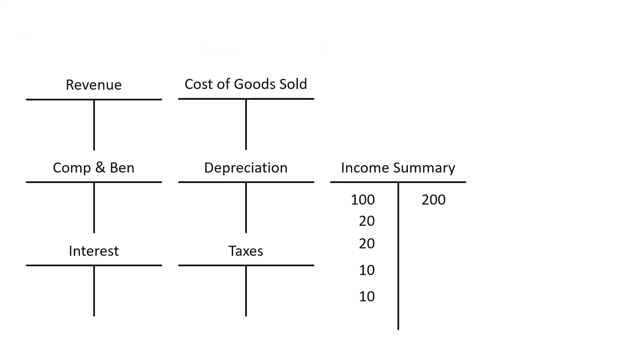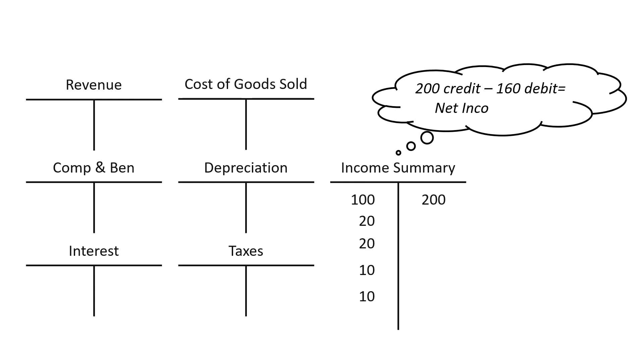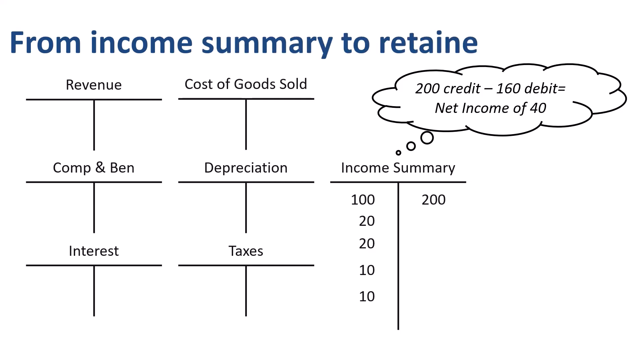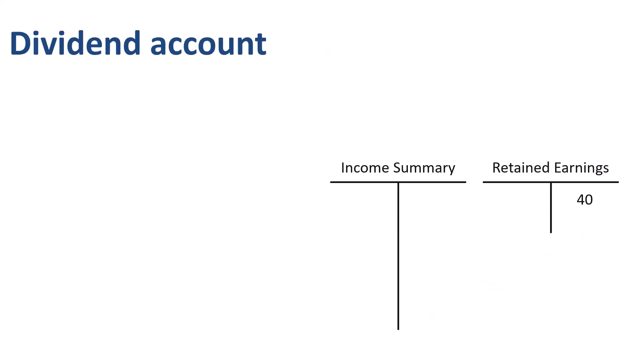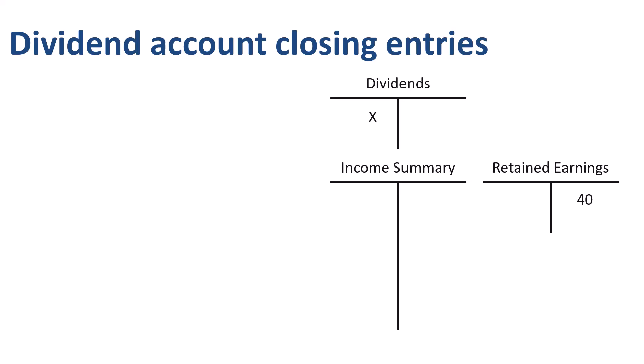The balance in the income summary account is a credit of 40. This needs to be validated versus the net income reported in the income statement. When correct, we can take the next step: closing out the income summary account by debiting it for 40 and crediting the retained earnings account on the balance sheet for 40. In the example, the company did not pay any dividends. If the company had paid dividends of X, the way to close out that account is to credit dividends paid by X and debit retained earnings by X. Revenue and expense accounts get closed out by transferring the balance to the income summary account, which in turn is closed out to retained earnings. Dividend accounts get closed out directly to retained earnings.